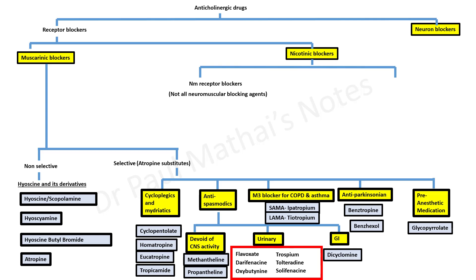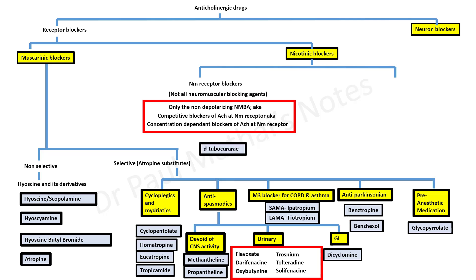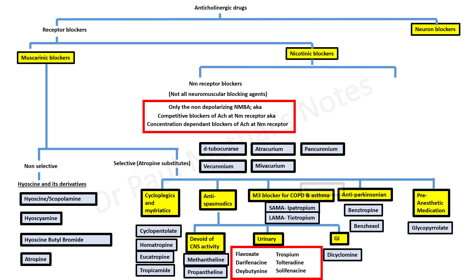NM receptor blockers include the non-depolarizing neuromuscular blocking agents, also called competitive or concentration-dependent blockers of acetylcholine at NM receptors. These drugs include d-tubocurarine, vecuronium, atracurium, mivacurium, pancuronium, rocuronium, and so on.